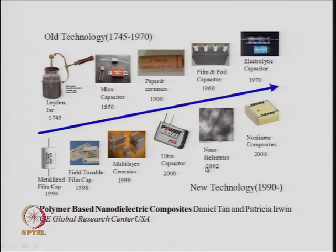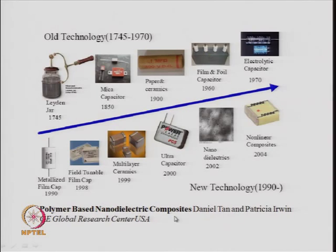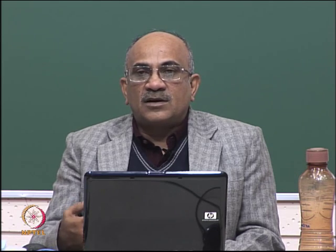Nano dielectrics are basically ceramics with very small particle size; when combined with polymers you get flexible dielectrics, including non-linear composites discovered around 2004. Polymer-based nano dielectric composites have become very important because they combine the high dielectric constant of the ceramic with the flexibility of the polymer — making them a critical and futuristic material for applications in electronic devices.